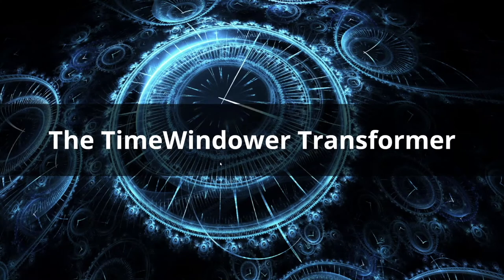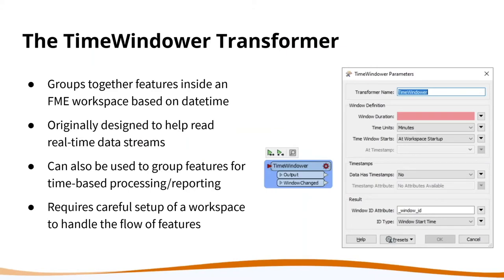The next thing is the Time Window transformer. It's not one of the core date-time transformers, but it's a different way of handling dates and times — it groups features together based on a datetime, creating windows. You say: split my data into one-hour periods, or five-minute periods, etc. Originally this was designed to help read real-time data streams. We can also use it for processing features in groups outside of a stream, though it requires careful setup especially for live streaming.